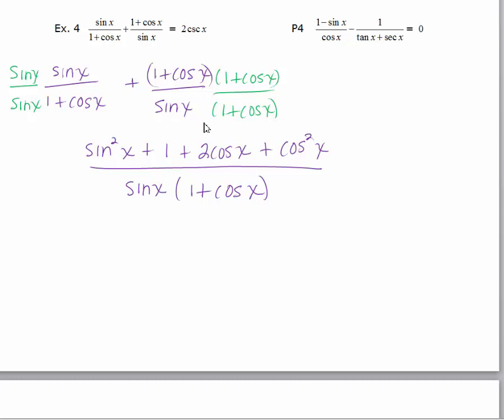Now addition is commutative and so I can see that I can combine the sine squared x with the cosine squared x and that's actually going to be equal to 1 using a Pythagorean identity. So sine squared x plus cosine squared x will be replaced with 1.